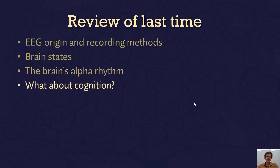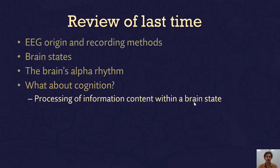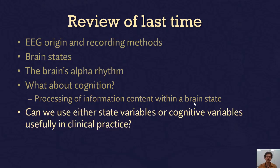What we didn't talk about last time was cognition. Everything we talked about was to do with brain state — you can think of brain state as the context in which cognition happens, while cognition is more like the content being processed. So how can we use EEG to get at cognition or the content of what's being processed in the brain? And can we use either state variables or cognitive variables usefully in clinical practice?